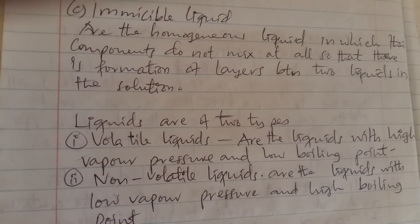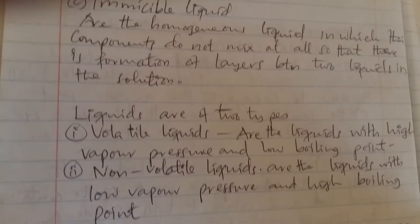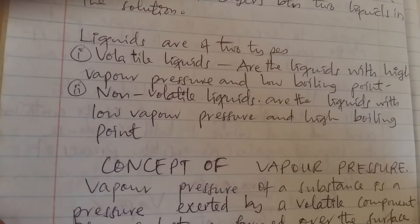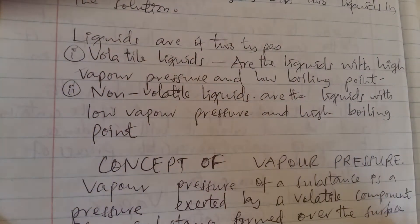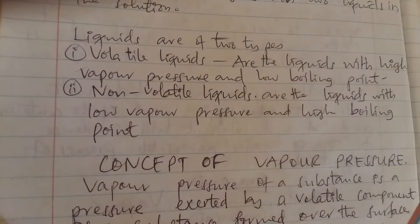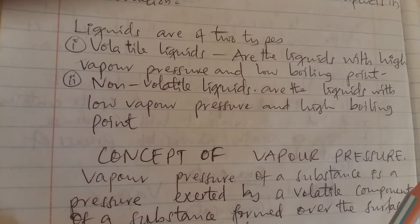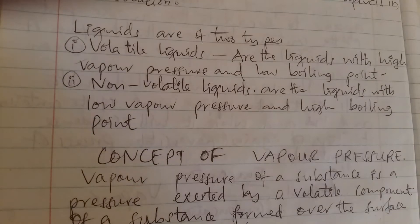Liquids are of two types: volatile and non-volatile. A volatile liquid is one which can vaporize easily — these are liquids with high vapor pressure and low boiling point. We already discussed vapor pressure in the context of gases, but we revisit it here. When we heat a liquid, the molecules tend to escape and form vapor, and the pressure exerted by that vapor is called the vapor pressure.